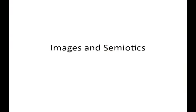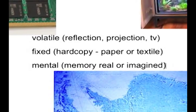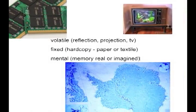When we talk about images, we talk about the nature of images and a field of study called semiotics. Looking at images, there are several basic types. There's the volatile, the fixed, and the mental image. A volatile image is something that changes very easily, is very fluid, like a television picture or a projection.